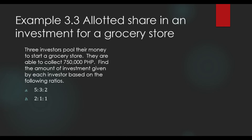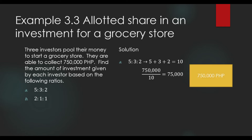For letter A, the ratio is 5 is to 3 is to 2. The sum of the terms is 10. We will divide P750,000 by 10, and the result is P75,000. So, we divide the total amount into 10 equal parts. Each part is worth P75,000.